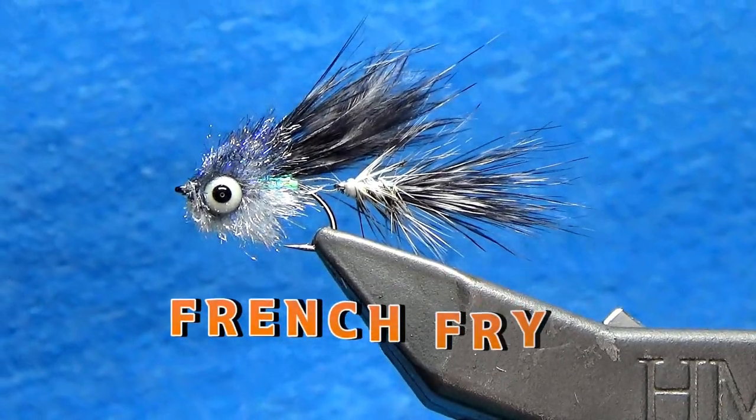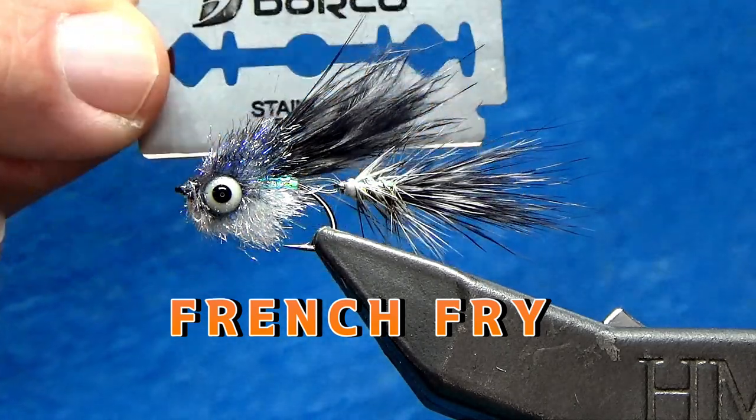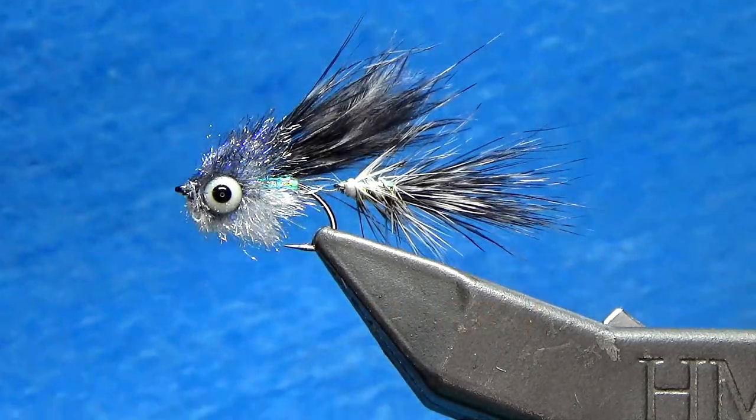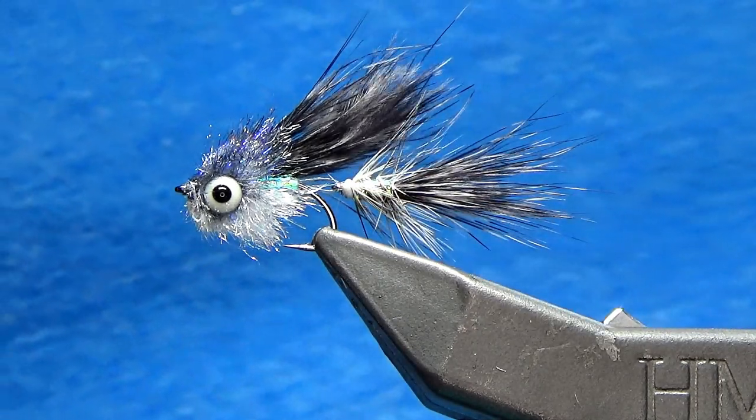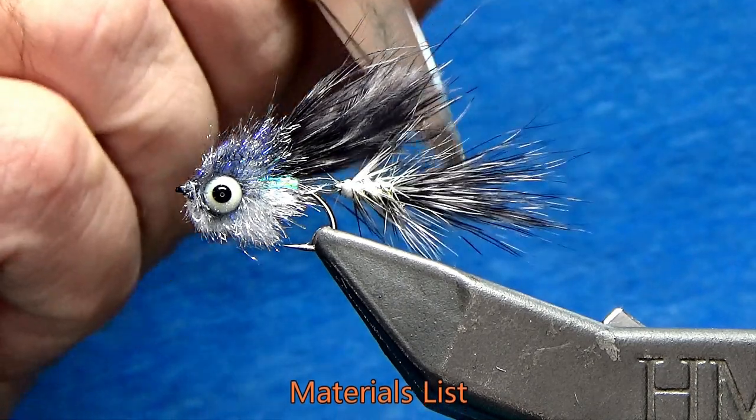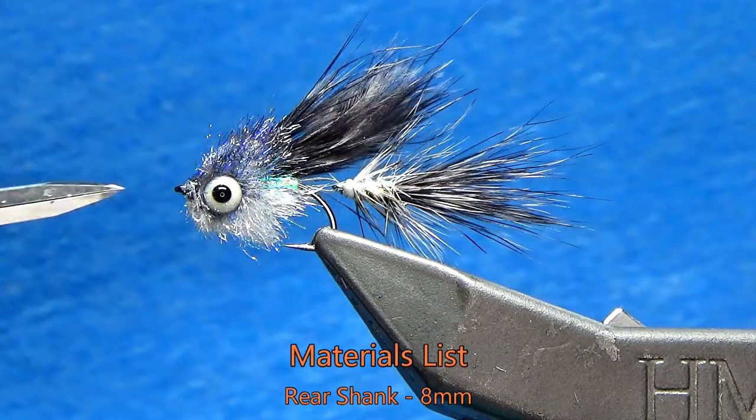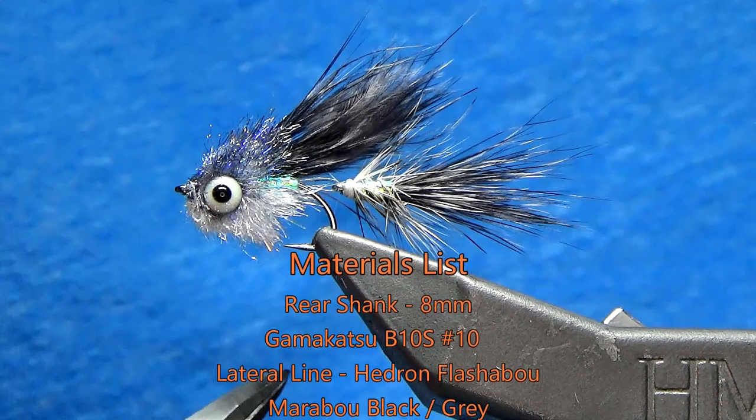Hey guys, this is the French Fry and as the name implies it is small. So it's a micro articulated streamer and off the back here I've got an 8mm micro shank. Up front I've got a Gamagatsu B10S size number 10.